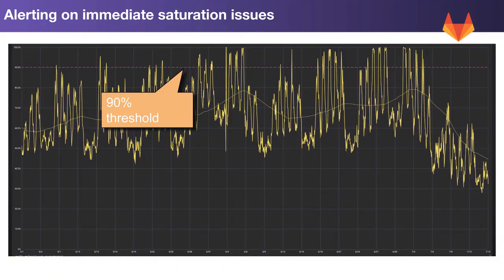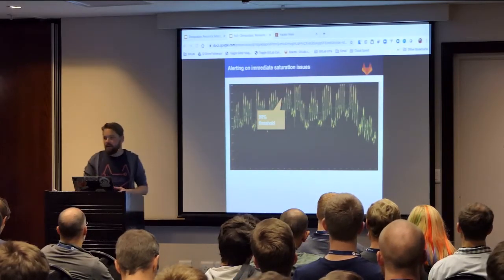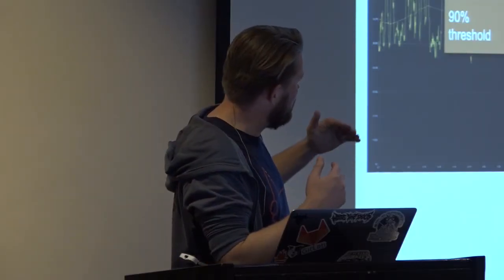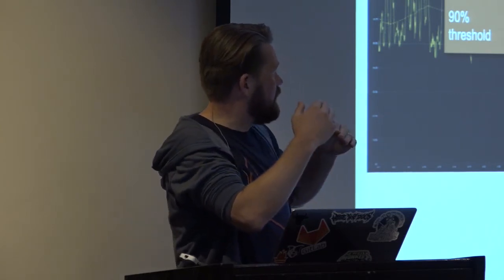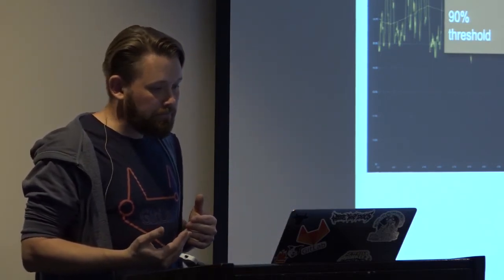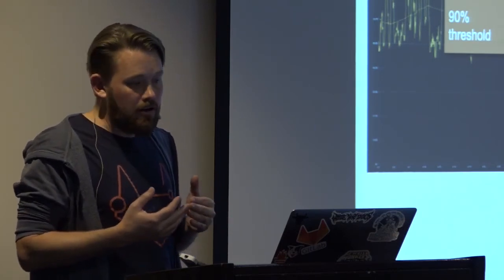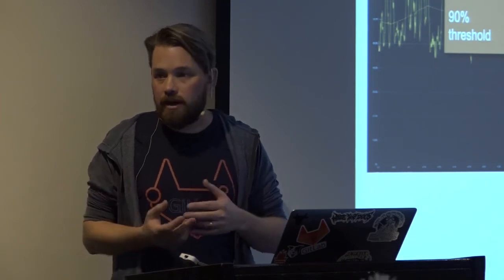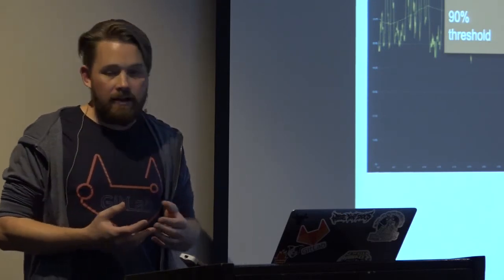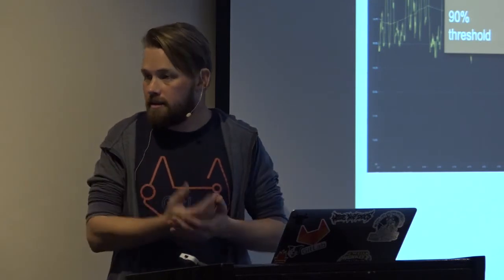The first thing we can do now that we have these recording rules — recording all of these saturation metrics — is start alerting on the immediate problem of saturation. There's a line we've put in at 90%, and any time any of our saturation metrics exceed 90% we'll get an alert. Using this same metric, we would have gotten those alerts in June and in the week leading up to the incident, and we could have made a plan. The great thing about this alert is that it's generalized — it doesn't matter whether it's 90% saturation on your Unicorn worker fleet or 90% CPU saturation. If it stays that way for five minutes, we get an alert.